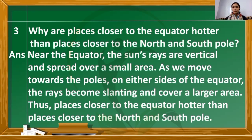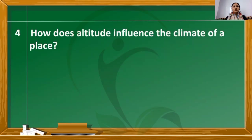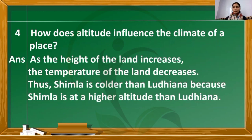I hope you have written the answer for question number 3. The fourth question: how does altitude influence the climate of a place? As the height of the land increases, the temperature of the land decreases. Thus, Shimla is colder than Ludhiana because Shimla is at a higher altitude than Ludhiana.